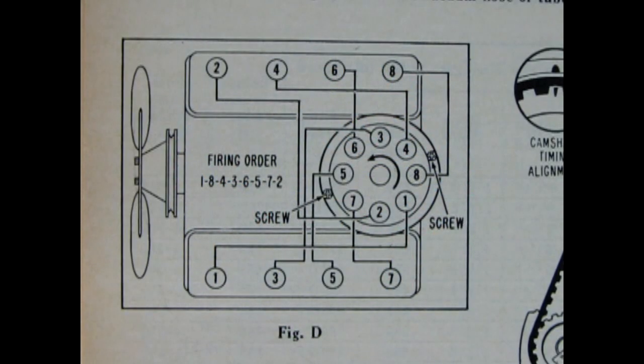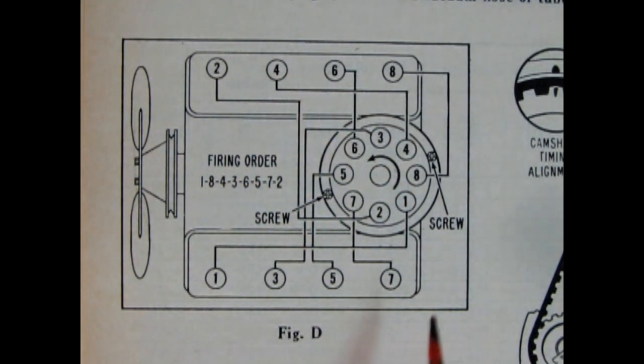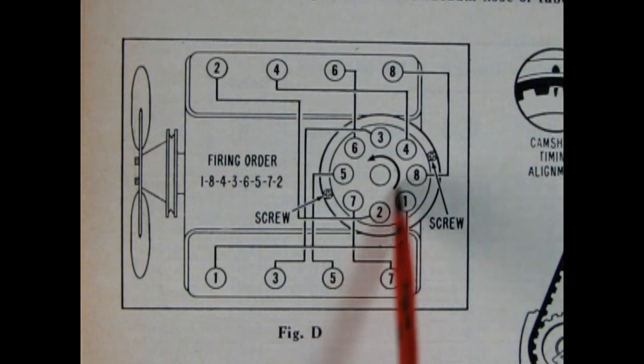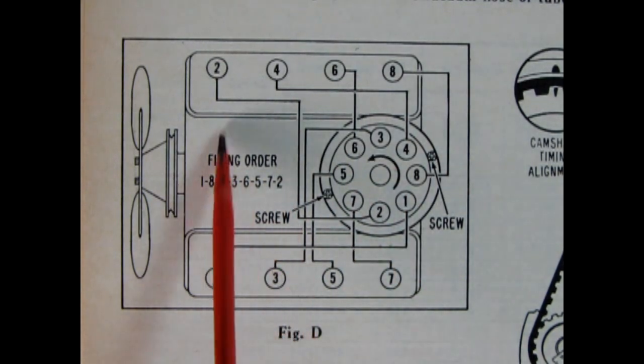Now for those of you out there that like all the extra detailing, here is the correct firing order for our 1965 Pontiac engine, right off the distributor here and off onto each of the spark plugs.